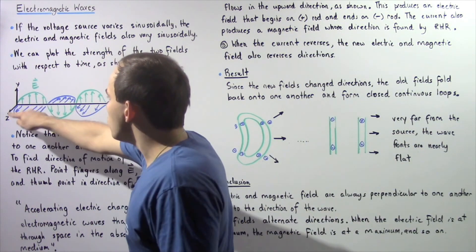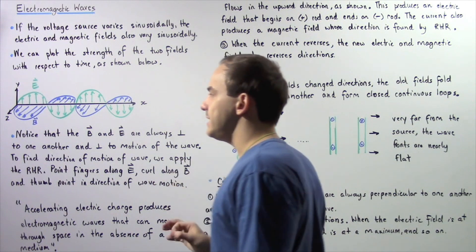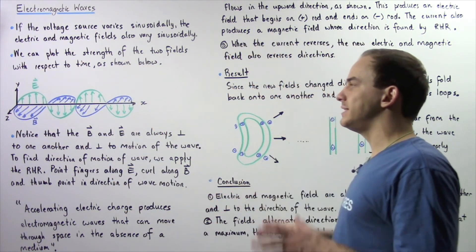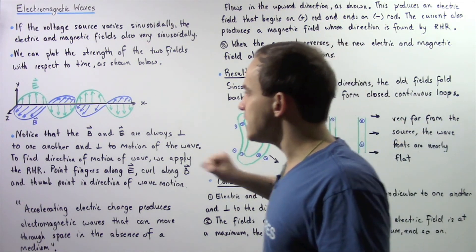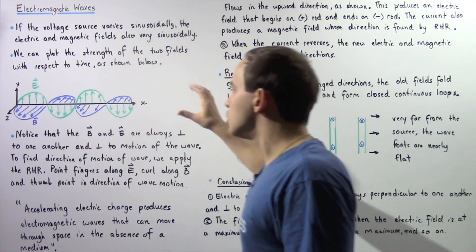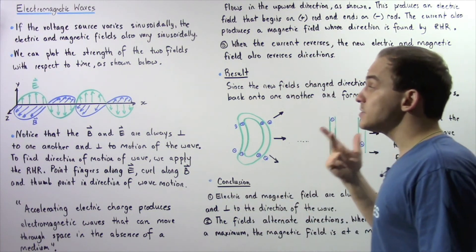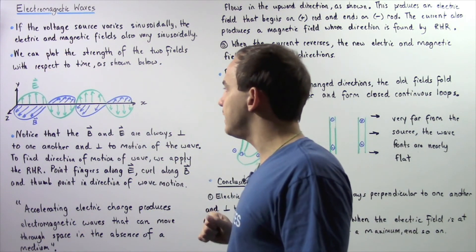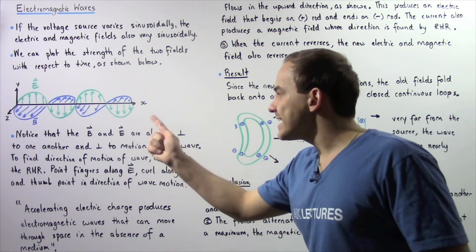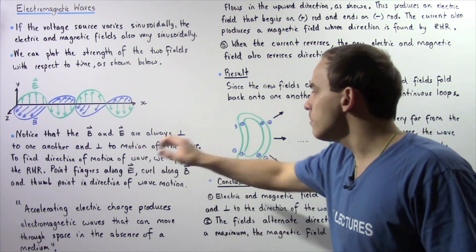The electric field moves up and down along the y-axis while the magnetic field moves up and down along the z-axis. They are always perpendicular to one another because the y and z-axes are always perpendicular. The electromagnetic wave propagates along the x-axis, moving from left to right, which means the wave's direction of motion is perpendicular to both the electric and magnetic fields.